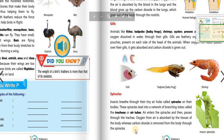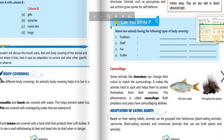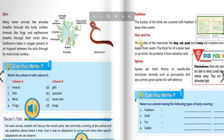Now let's move to the next part which is skin. A few animals are made to breathe through their skin. Many lower animals like amoeba breathe through the body surface. Animals like frogs and earthworms breathe through their moist skin. Earthworms take in oxygen present in the air trapped between the soil through their moist body surface.